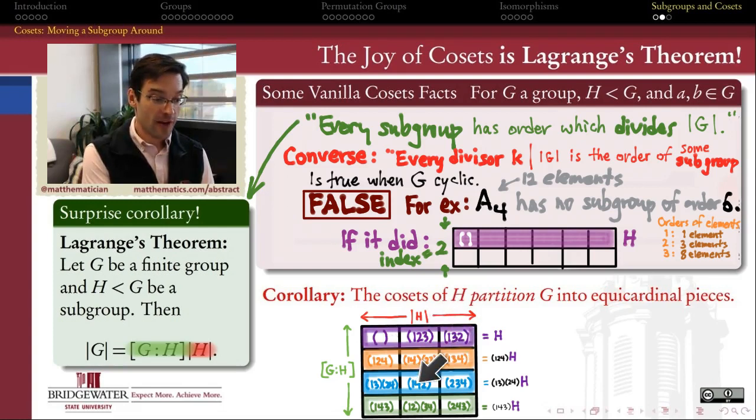And every other element of A4 is an element of order 3, because it's a 3-cycle. There's 8 elements of order 3. So let's think about which of those elements can fall into my subgroup H.